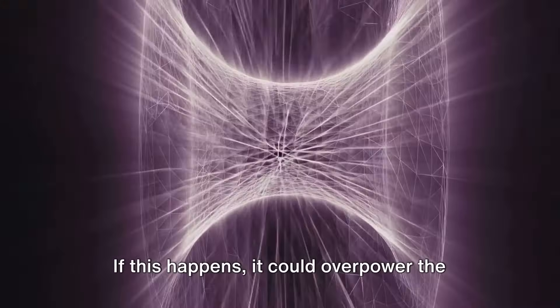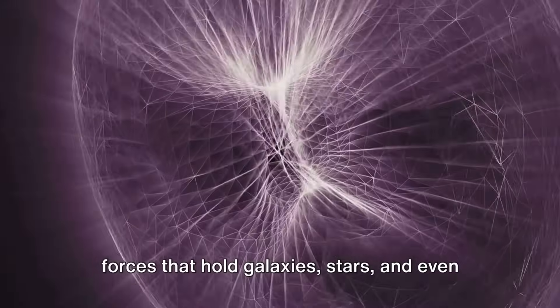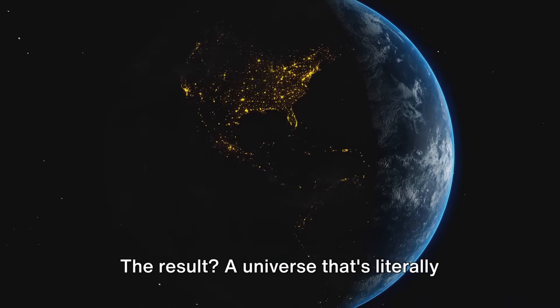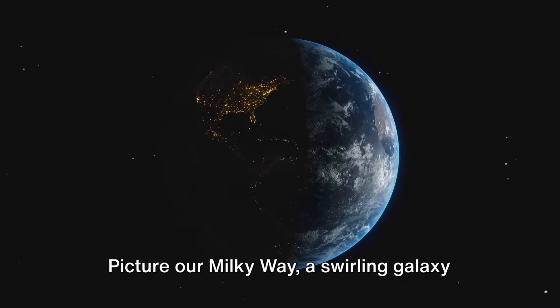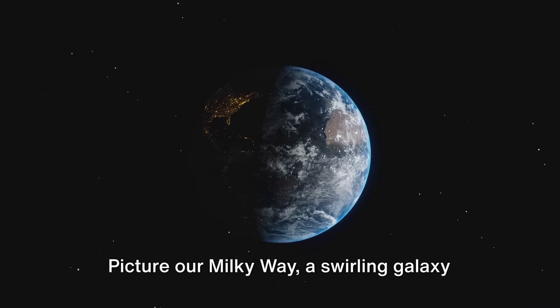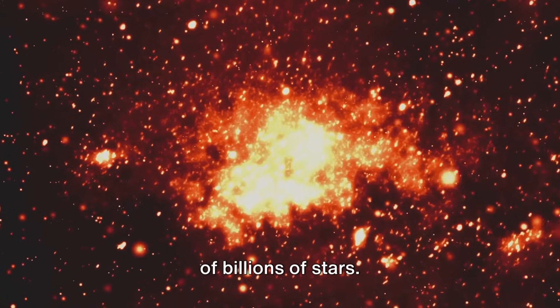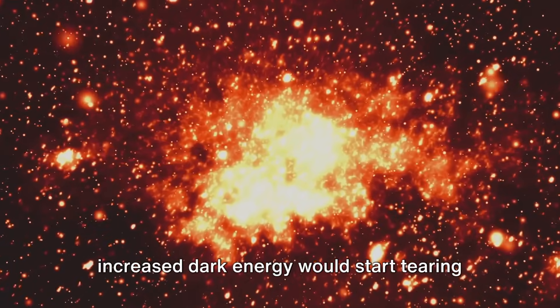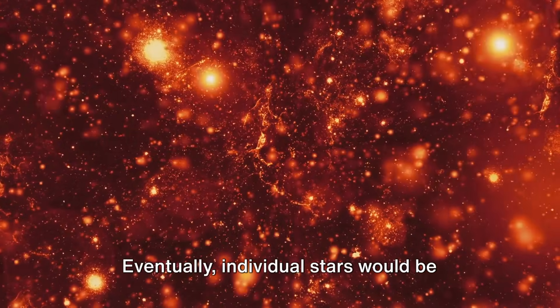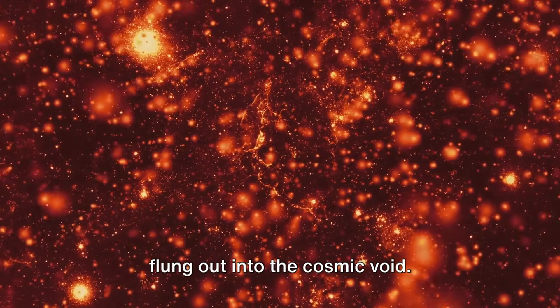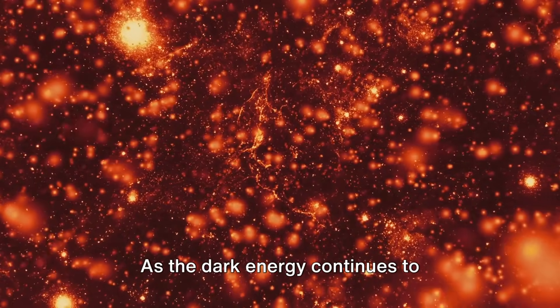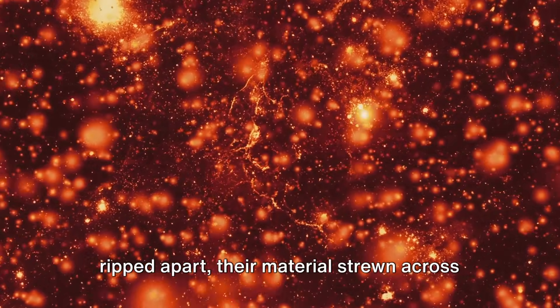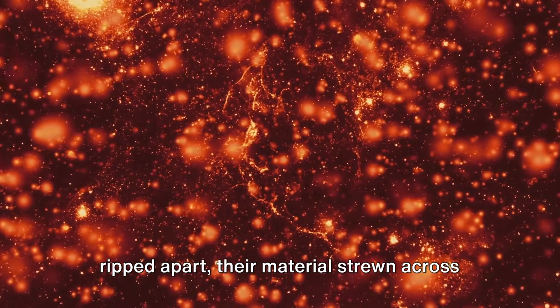The Big Rip theory proposes that the strength of dark energy could increase over time. If this happens, it could overpower the forces that hold galaxies, stars, and even atoms together. The result? A universe that's literally ripped apart. Picture our Milky Way, a swirling galaxy of billions of stars. In the run-up to the Big Rip, the increased dark energy would start tearing galaxies apart. Eventually, individual stars would be flung out into the cosmic void. As the dark energy continues to strengthen, even these stars would be ripped apart, their materials strewn across the universe.